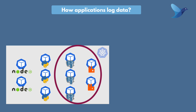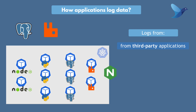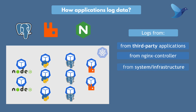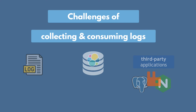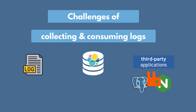What about the third-party applications in your cluster, like databases and message broker? Also in Kubernetes, requests go through an Nginx controller — so what if you want to see those logs too? Or what about system logs? You can't control how they log. So how do you collect logs from all these different data sources? All of these are challenges of collecting and consuming logs in complex applications, because you have loads of data which you can't really consume and analyze since you don't have it all in one place in a unified format.